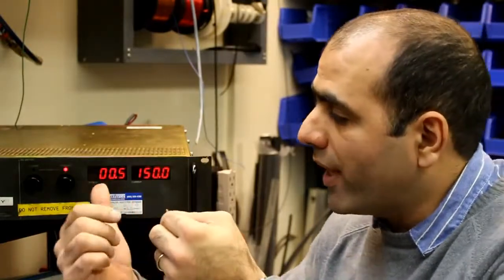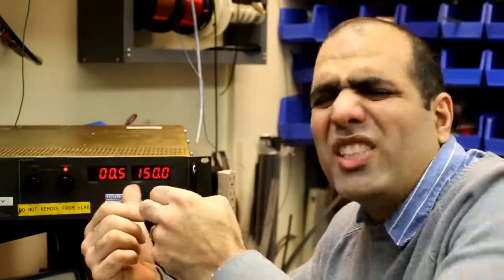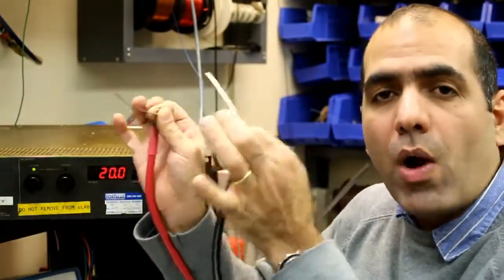You see when I shorted, the voltage goes down. When you short it together, the voltage goes to zero and the current goes to 150. It's hot. The power supply is set to 20 volts and I'm holding the wires with my fingers.